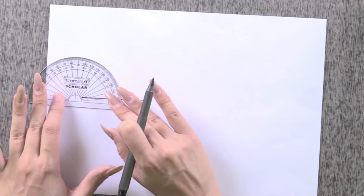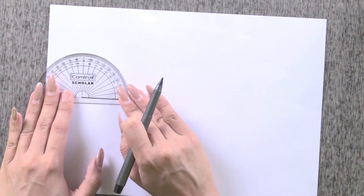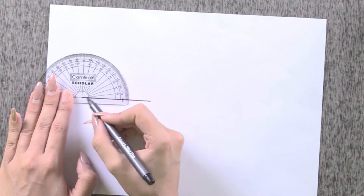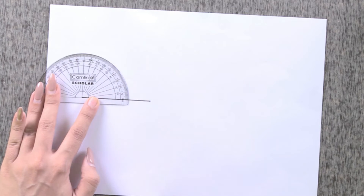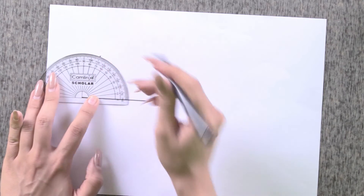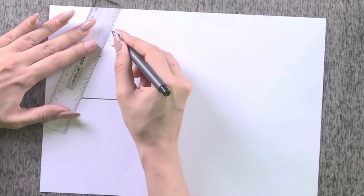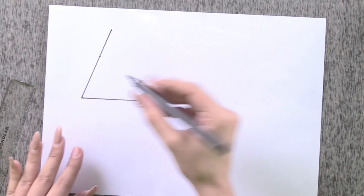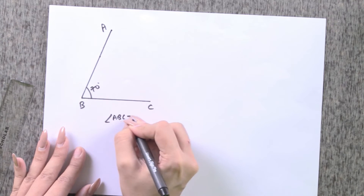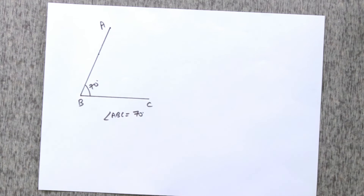Now I have to draw an angle on this line. Simply place the protractor so that the baseline of the protractor coincides with the line, and the center point coincides with the first endpoint of the line. Let's draw 70 degrees — that's an acute angle. We always consider the markings on the inner side. 70 degrees is here — put a point there and draw the line. This angle is 70 degrees. Label it angle ABC = 70°, which is an acute angle.